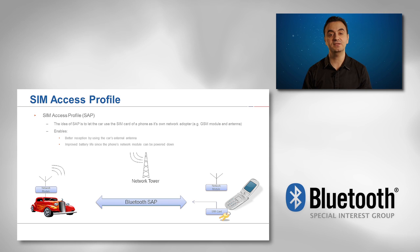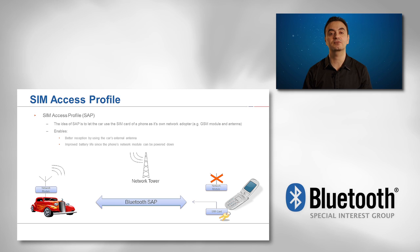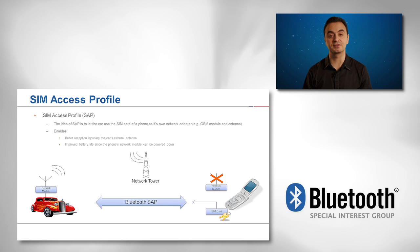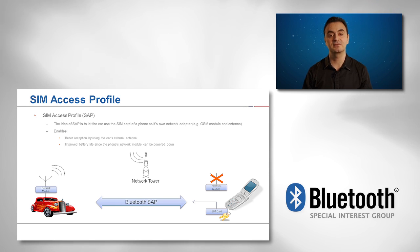When this feature is used, the mobile phone itself usually will not have access to the SIM card anymore, since the car's network module is accessing and using the mobile phone's SIM card data. This is a powerful use case, enabling better network coverage by using the car's external antenna instead of the mobile phone antenna to receive the cellular signal.